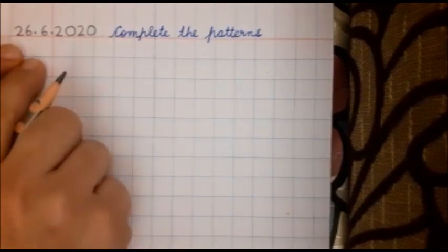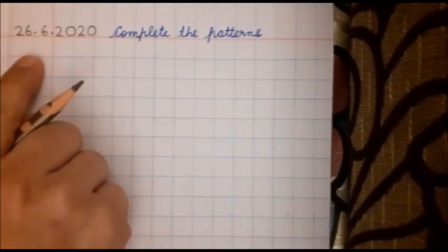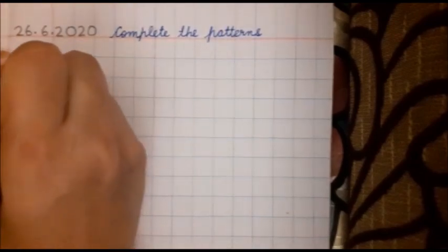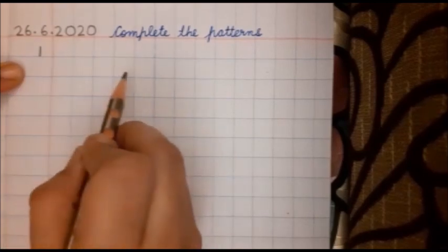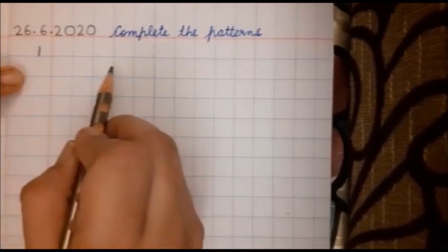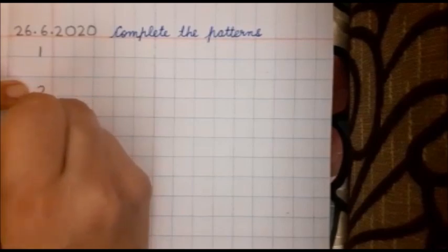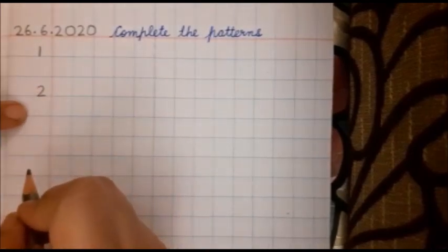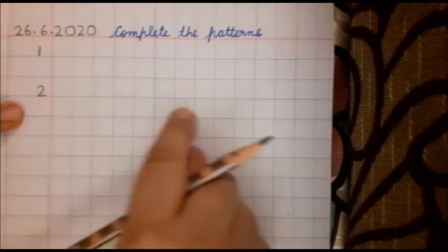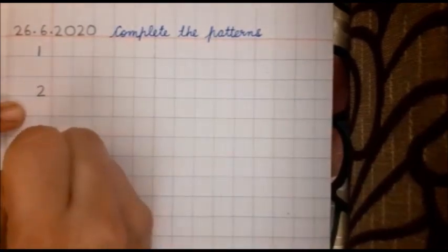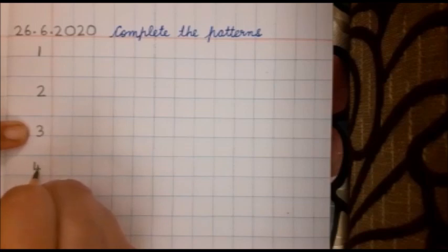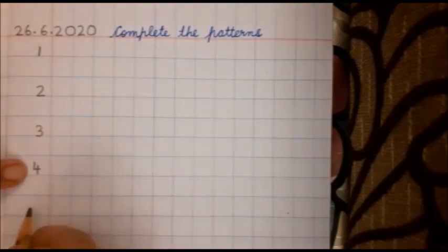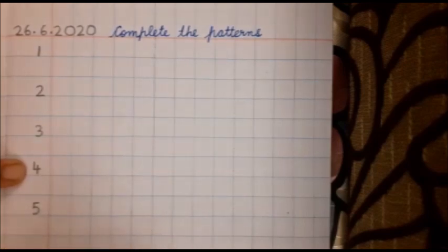Now below the date, yehaan pe you will write 1. Write number 1. Leave a space. Yehaan pe ek row ma'am chhod rahi hai. I am leaving this line here. Next line, 2. I am leaving this again. Ek line ma'am chhod rahi hai. 3. 4. And 5.